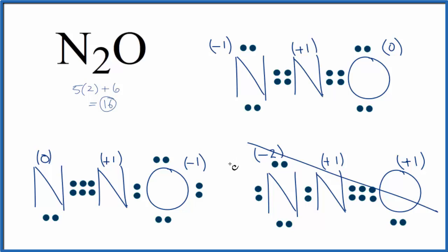So we're going to select the Lewis structure that has the negative charge on the more electronegative element. So the oxygen here has the negative one. That makes sense. It's more electronegative than nitrogen. So this is the Lewis structure for N2O. This would be the best or most favorable Lewis structure for N2O.